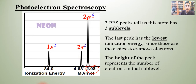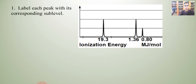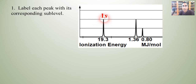This is the photoelectron spectroscopy diagram for neon. Now let's try an example with PES for an element we don't know. Here is a PES diagram for this element. Let's label each of the peaks with its corresponding sublevel. In these diagrams, we always go from left to right starting with 1s, then 2s, and 2p. So the first peak is 1s, the second peak is 2s, and the last peak is 2p.